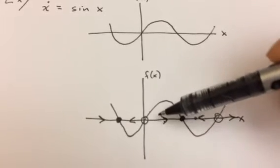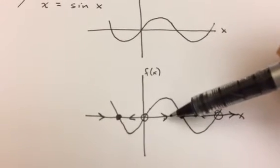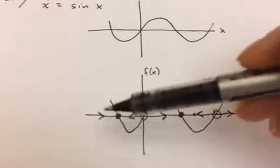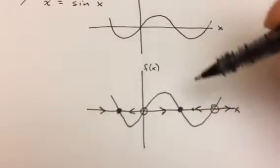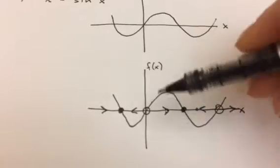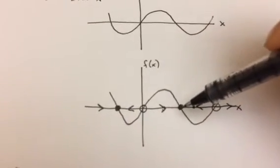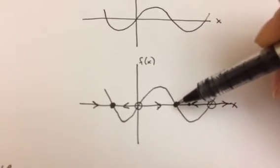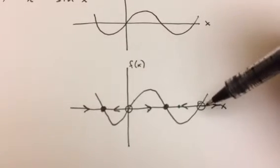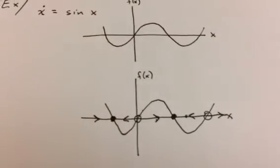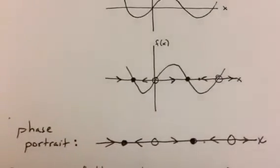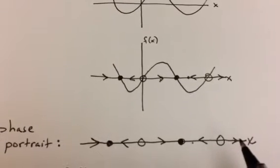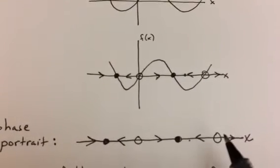And whenever the change with respect to time is positive, our position is going to be increasing, and so we can put in an arrow in this direction. And so filling in all of those arrows, in addition, we draw in circles wherever we have a fixed point, and if arrows are pointing towards a fixed point, solutions are moving towards that fixed point, we call that stable, as he said, and we color it in. Or if solutions are moving away from a fixed point, we leave it as an open circle.